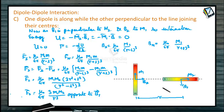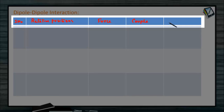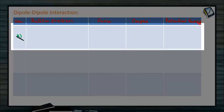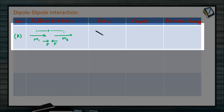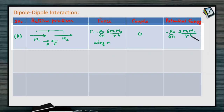Now let us put the dipole-dipole interaction results in a tabular column. Columns: serial number, relative positions of dipoles, force, couple, and potential energy. Part A: both dipoles are aligned along the same axis, M1 and M2. Force = minus mu naught by 4 pi times 6M1 M2 by R to the power 4, along R (attractive). Couple = 0. Potential energy U = minus mu naught by 4 pi times 2M1 M2 by R cubed.